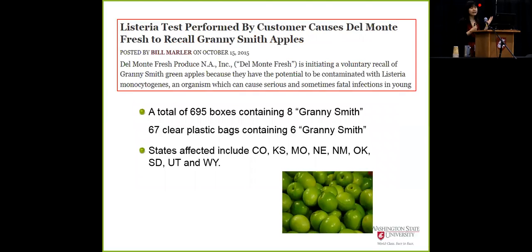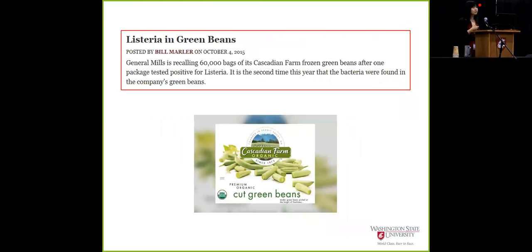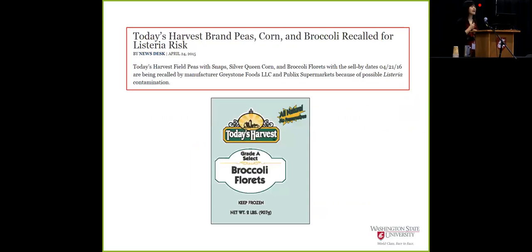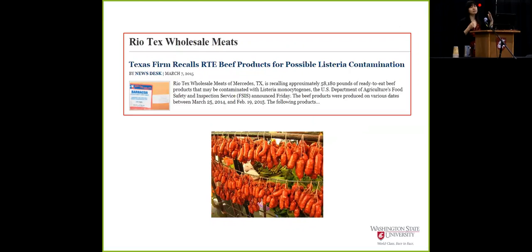Here is recent data on Listeria recalls in different fresh produce. Last October there were Listeria recalls involving Glenmore Smith products, green beans, corn, and sprouts. A sprout company had multiple recalls associated with Listeria this year — a major warning. There were also Listeria recalls on broccoli and frozen foods. Even though I said the meat industry is well controlled, they can still get Listeria, which means because of Listeria's persistence, we need to be really careful about environmental sources and produce.